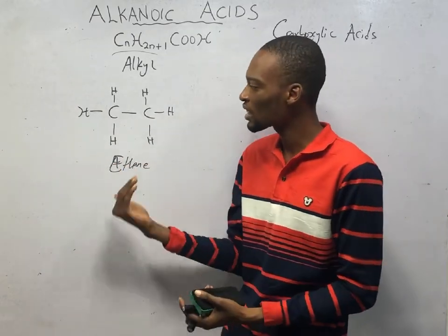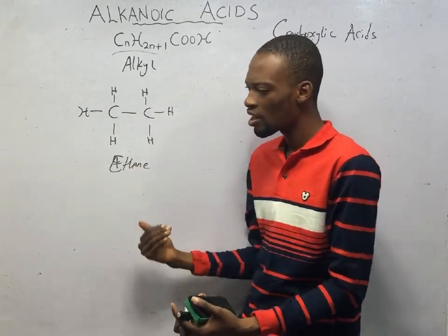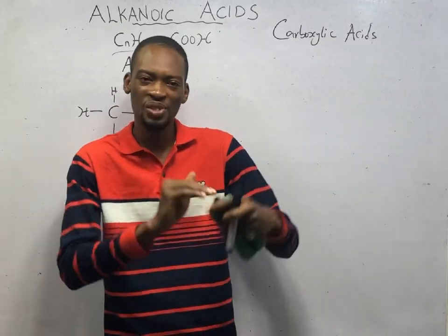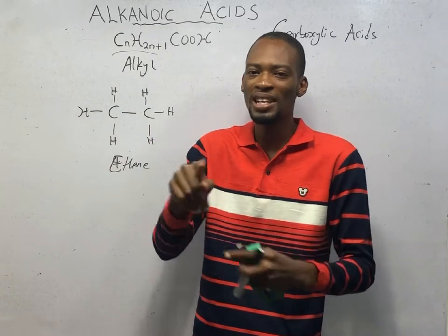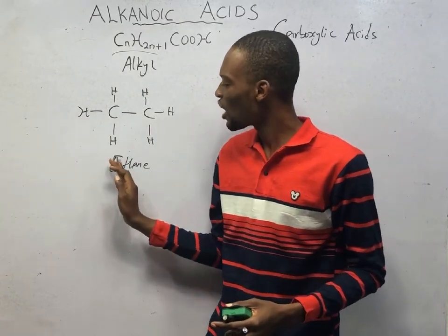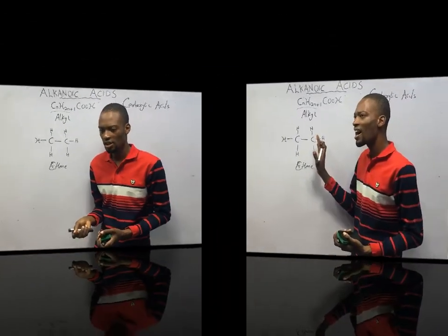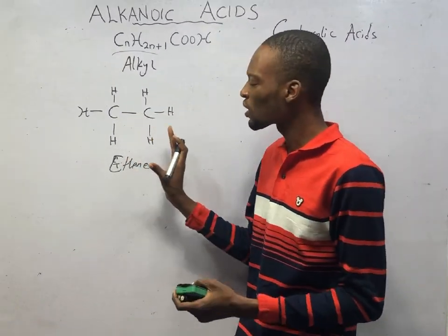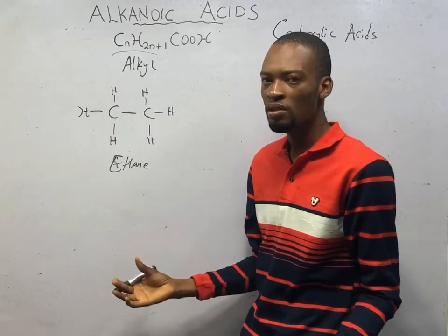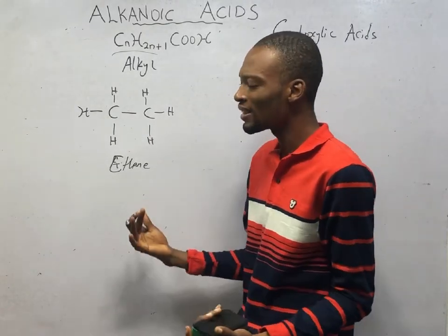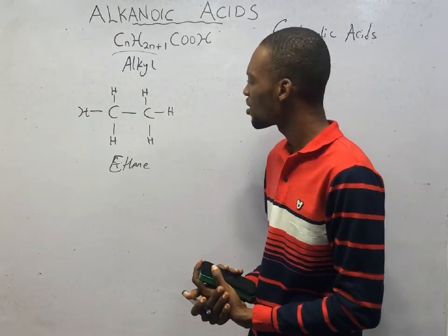Hydrocarbons can be divided into aliphatic and aromatic hydrocarbons. Aliphatic hydrocarbons have straight chains or branched chains and can be cyclic or acyclic. Aromatic hydrocarbons contain the benzene ring. Compounds with single carbon-to-carbon bonds throughout are referred to as saturated compounds — they cannot undergo addition reactions; they simply undergo substitution reactions.